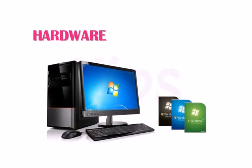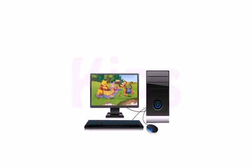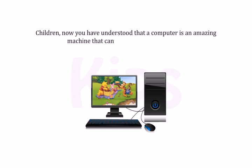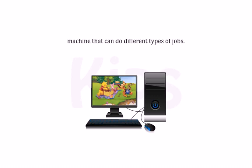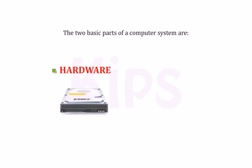Hello students, let us learn about hardware and software. Now you have understood that a computer is an amazing machine that can do different types of jobs. It has different parts that work together to form a computer system. The two basic parts of a computer system are hardware and software.